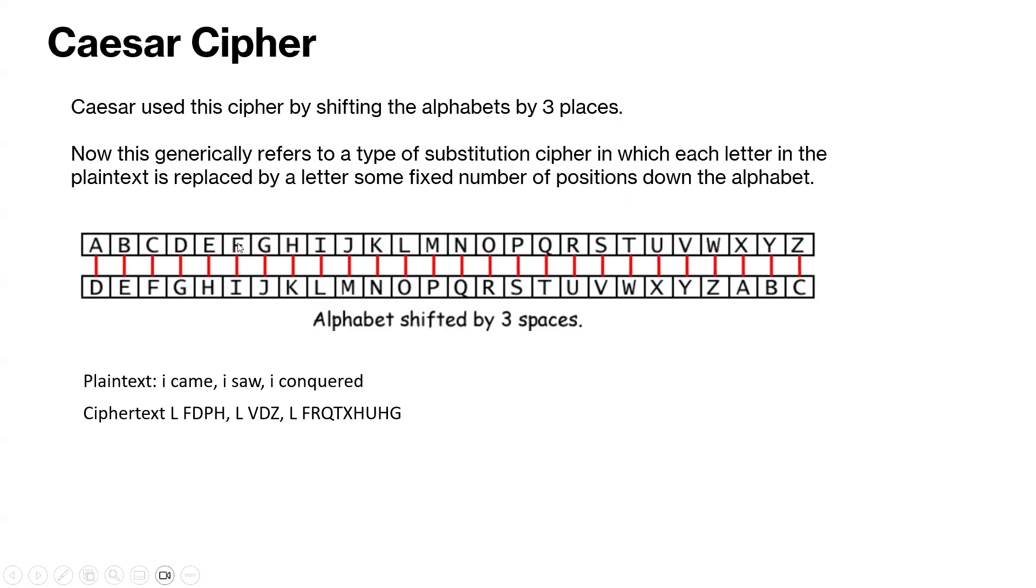So came, c is f, a is d, m is p, and e is h. So that's where came comes into play. This is what the ciphertext would look like for such a quote.